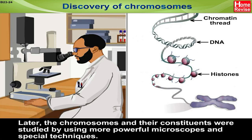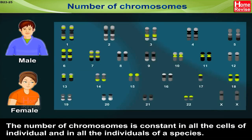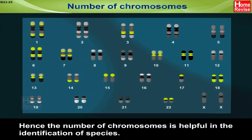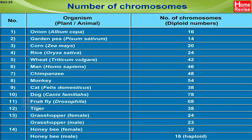Later, the chromosomes and their constituents were studied by using more powerful microscopes and special techniques. The number of chromosomes is constant in all the cells of an individual and in all individuals of a species. Hence, the number of chromosomes is helpful in the identification of species.